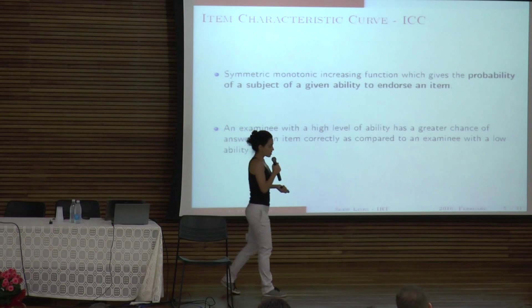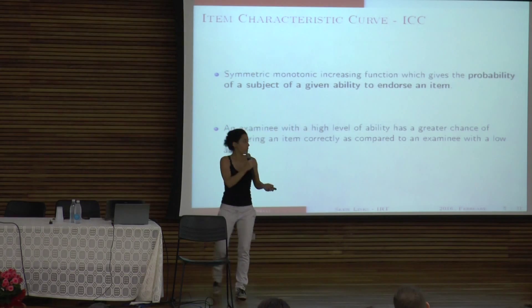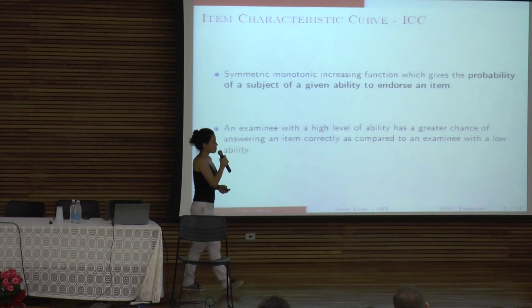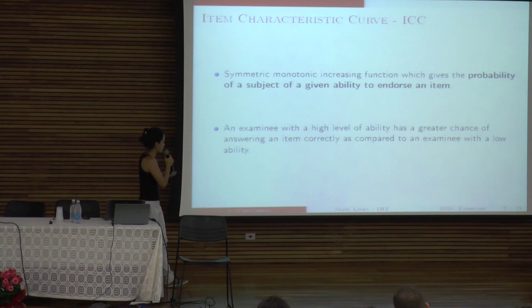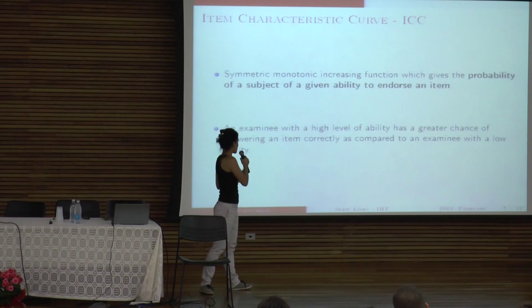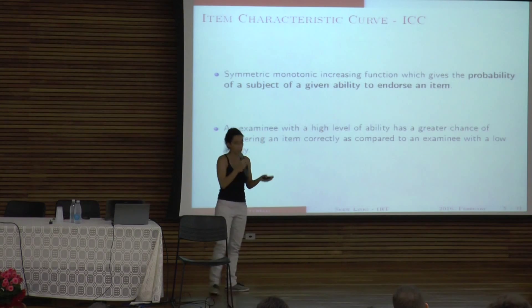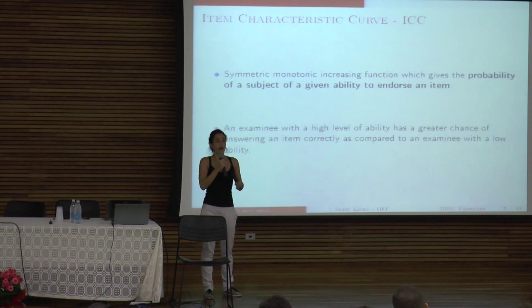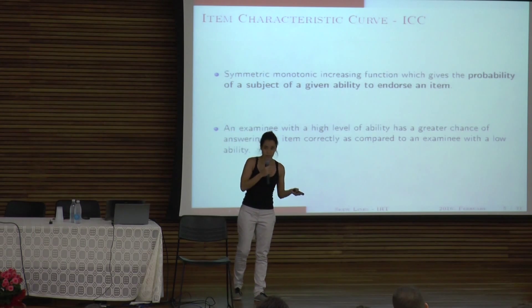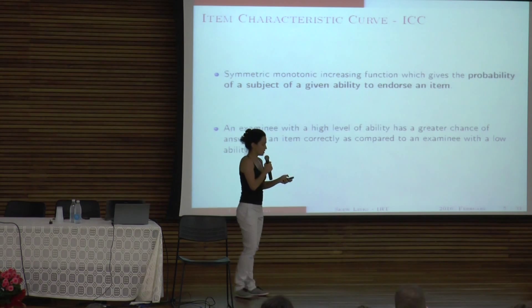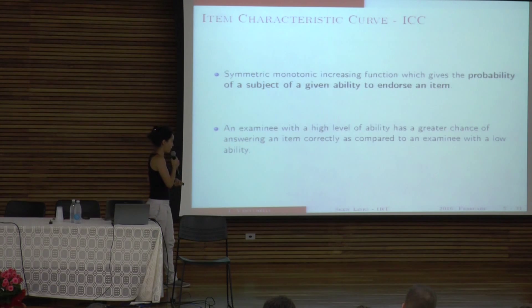So one of the main features of IRT is the item characteristic curve. It's a symmetric monotonic increasing function, which gives me the probability of a subject of a given ability to endorse an item. So we would expect that the higher the ability, the higher the probability of the person to get the item correct. And the lower the ability, the less the probability of success in an item.